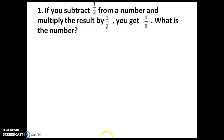So what we should do is write this in the form of a linear equation. We don't know the number. What they are telling is that the number when subtracted from 1/2 and multiplied by 1/2, the final answer we will get is 1/8. So let us take the unknown number as x. We have to write this in the form of a linear equation.